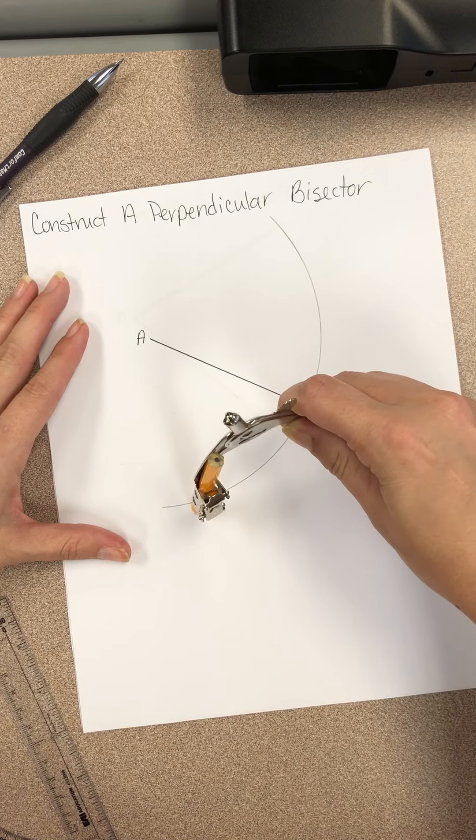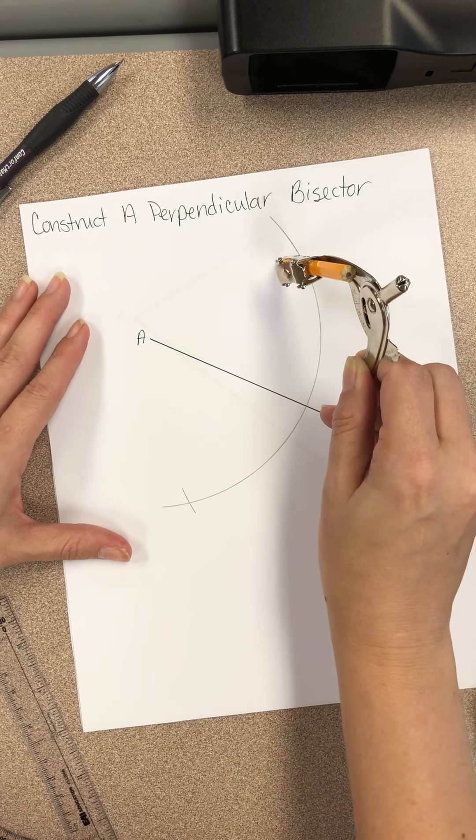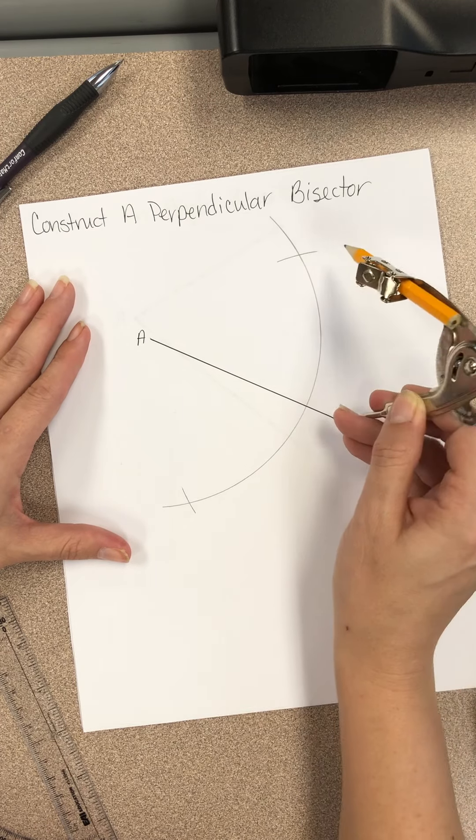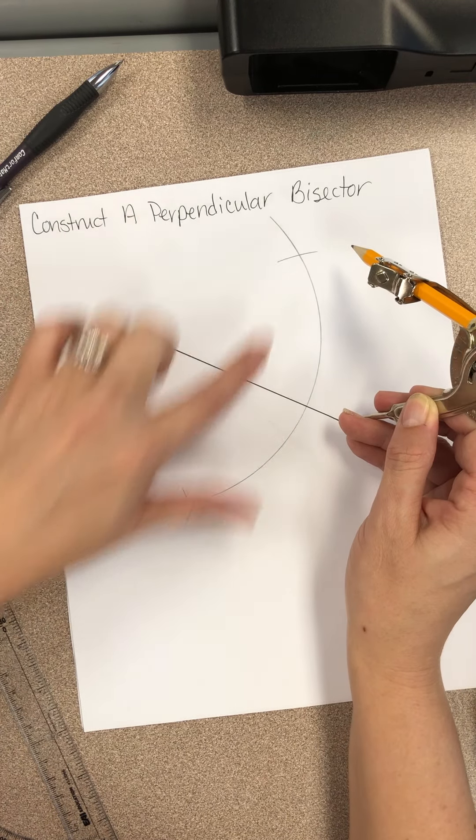Alright, so we have to draw another great big arc. Of course, you don't have to do a great big one. You could just do it like that. So it depends. If you feel more comfortable doing the whole thing, do the whole thing. If not, you can just do little ones.